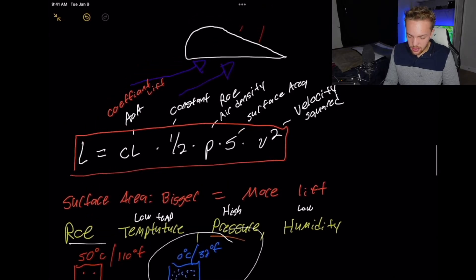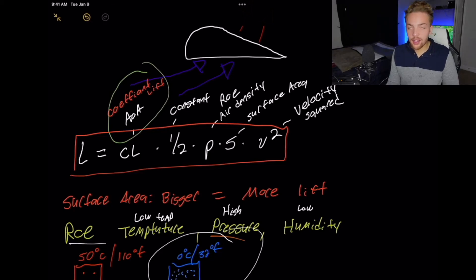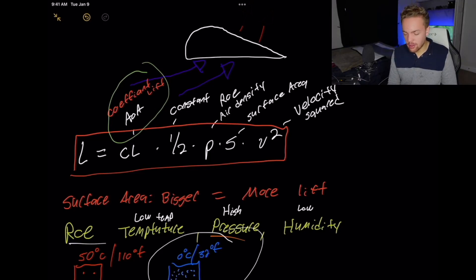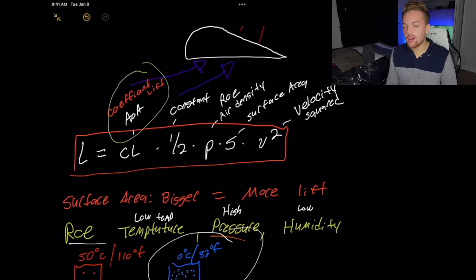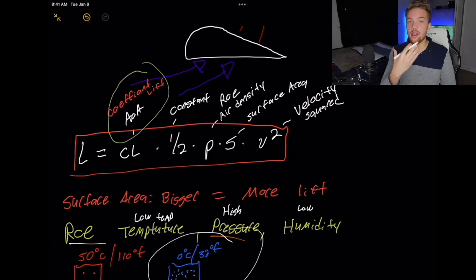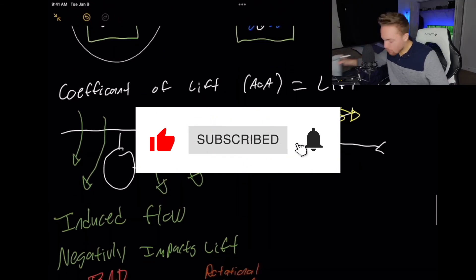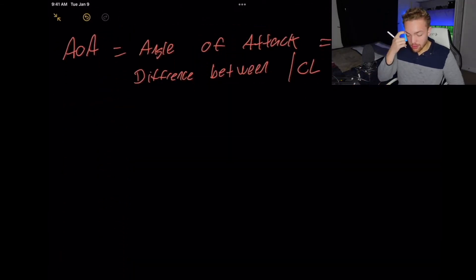So we talk about this lift equation — lift equals the coefficient of lift (angle of attack), super important. What makes our angle of attack bigger? Getting into forward flight and getting rid of induced flow. We've got the one half constant, rho which is air density, surface area — the bigger the blade the more lift — and then what part have we not talked about? Velocity squared. It is the only variable in this equation that is squared, which means you multiply it by itself, so it is the most important factor. Let's talk about velocity squared.